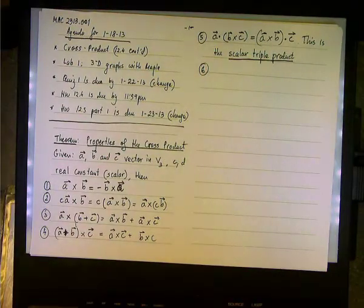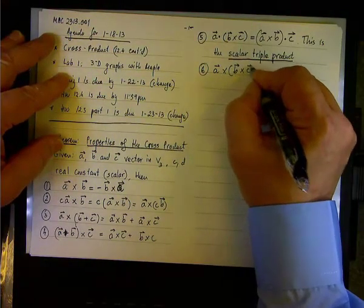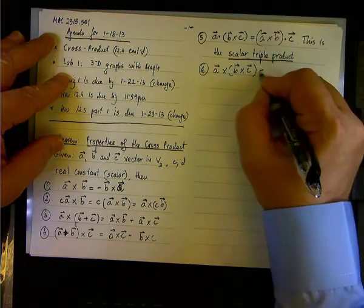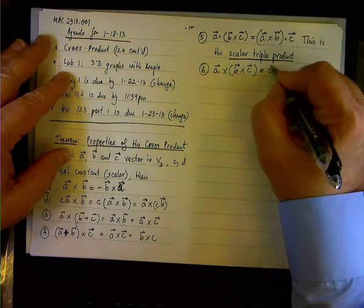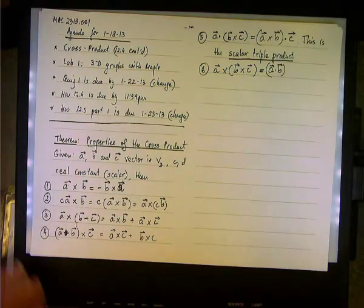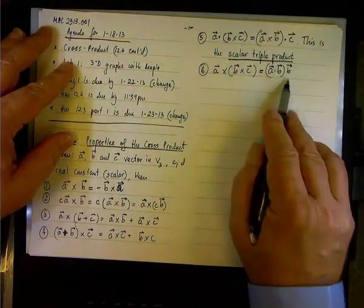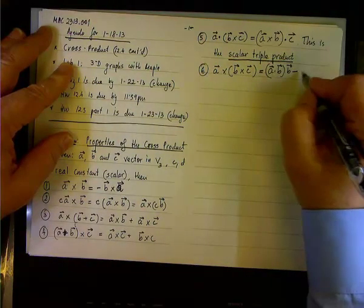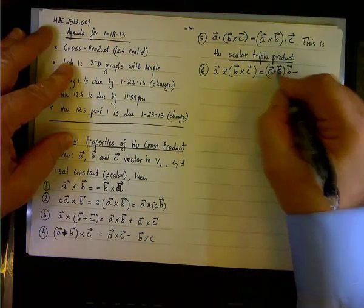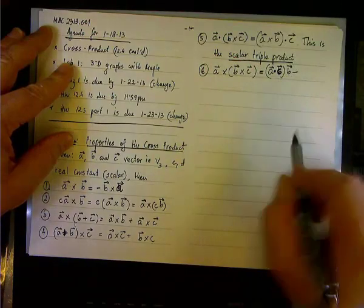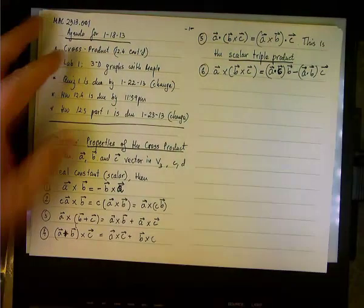So is the last property, six, where we have a vector triple product. And you can imagine that what it means is we take a and we cross product it with a vector that is the result of b cross c. Okay? So what is this outcome? The vector triple product. Well, it turns out it is the dot product, the quantity that, or the scalar that is the result of the dot product of a and c. So remember, this is the dot product, so this is a scalar. And we multiply this scalar by the vector b. So we scale vector b, and then we subtract the dot product a dot b, like so, multiplying the vector c.